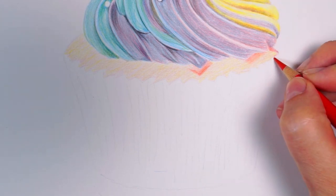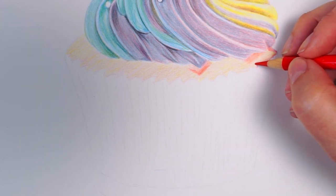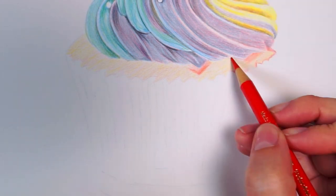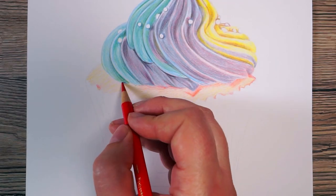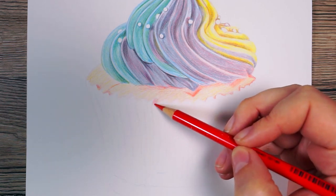And then also in some of the shadows created by the icing, they were very red colored shadows. So then I went in a bit firmer with the red just to try and mark out where those shadows are going to be.